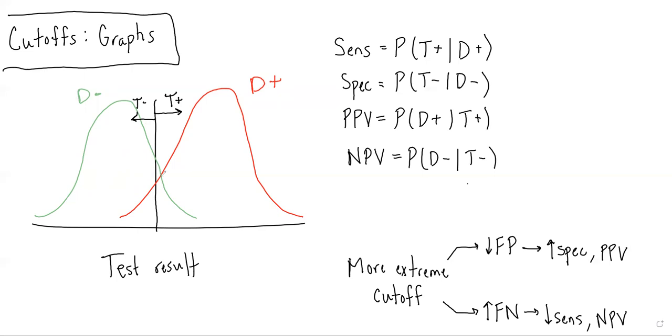So that would be the area in red to the right of this cutoff divided by the total area, including this bit among patients without the disease who had a false positive result.